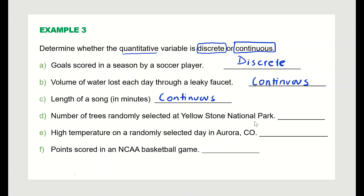Number of trees randomly selected at Yellowstone National Park would be 7, 10, 15, or 17 — a whole number — so that is discrete. High temperature on a randomly selected day in Aurora, Colorado can be 87.5 or 87.8 degrees, taking decimal values, so that is continuous. Points scored in an NCAA basketball game will be a whole number only, so that is discrete.